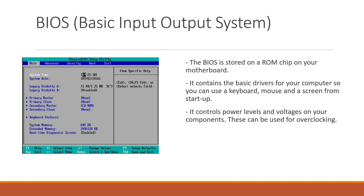People can use the BIOS to set the time and date, the order in which the internal devices are checked for an operating system to boot up, and can use this to adjust the power levels of certain components, such as the central processing unit, which allows them to overclock it, resulting in them running faster than they are designed to.